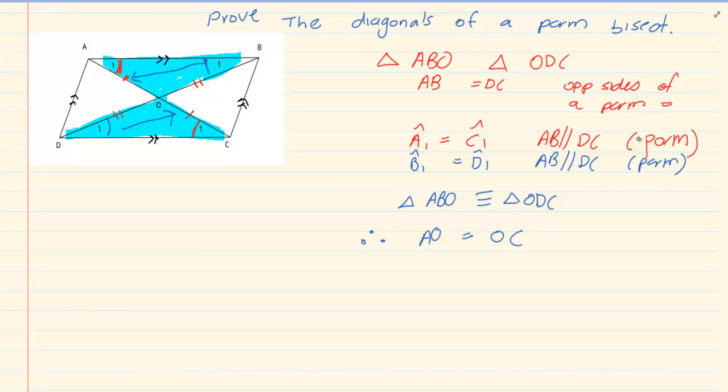And if A1 is equal to C1, then I can say that OB is equal to OD. And you've just proven that the diagonals bisect because bisect means cut in half. Thank you for watching.